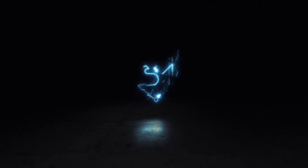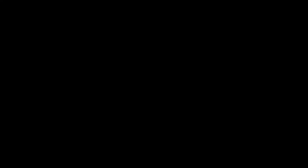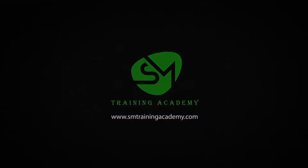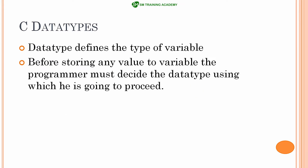In our previous video we learned what variables are in C and why they are used. We also learned the characteristics that define variables — specifically the type of data you want to store, whether it is an integer or real number, and the size of data, whether one, two, four, or eight bytes — that you want to hold in the variable.